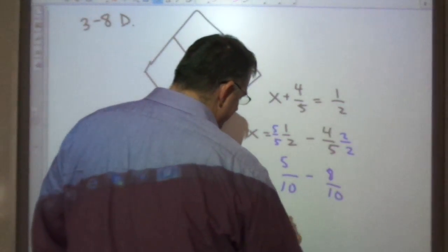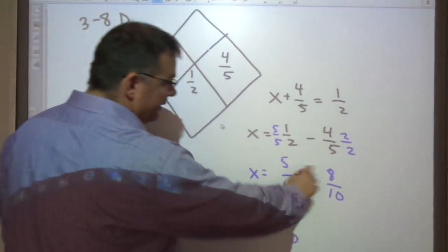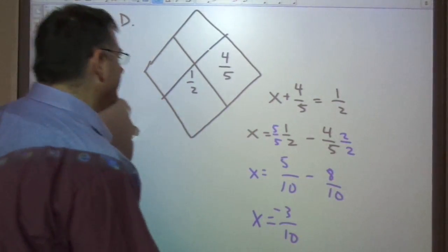We keep the bottom the same. Tenths. And just subtract the tops. Negative 3 tenths.